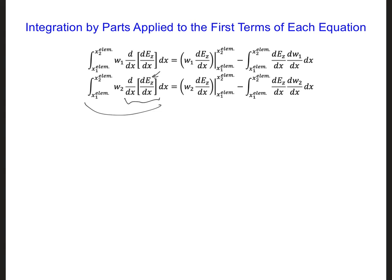So that now, instead, we have one spatial derivative on ez, and we also have a second spatial derivative on the weighting function right here. So now we can still use the linear interpolation functions that we've chosen without causing one of the terms in the weak form of the wave equation to evaluate to zero, which is what we had here on the left-hand side.